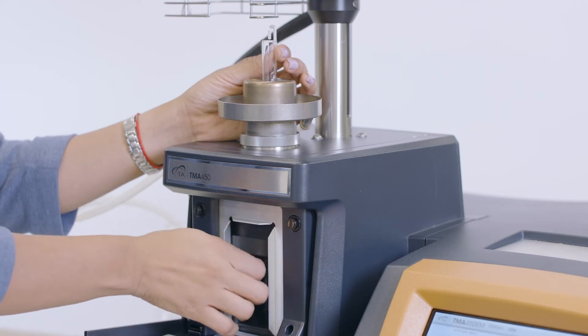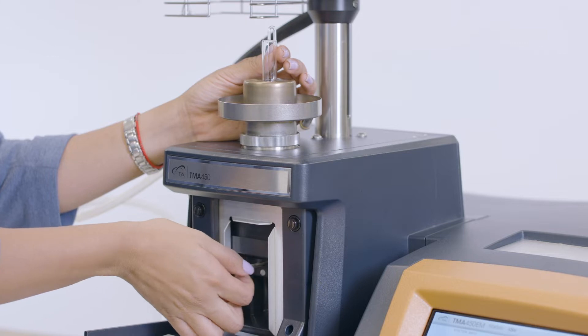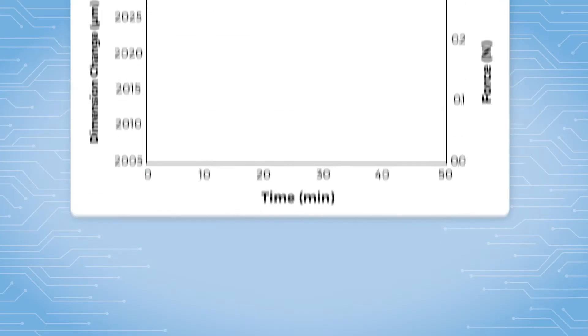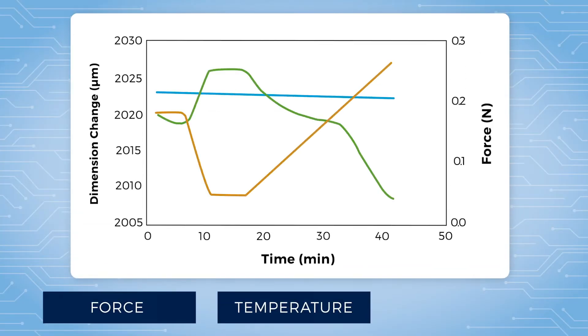The TMA film fiber setup allows measurement of physical properties of fibers and films as a function of force, temperature, or time.